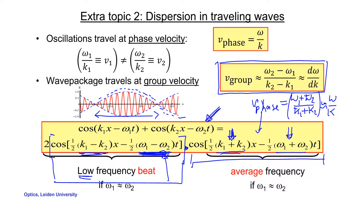Please remember: if you have a composite wave, you can distinguish two different velocities. The fast oscillations — the waves themselves — travel at the phase velocity. The wave packet, the envelope, travels with the group velocity, given by the difference between the omegas and k's of the individual waves. And if ω₁ and ω₂ are almost the same, you can replace these differences by a derivative.